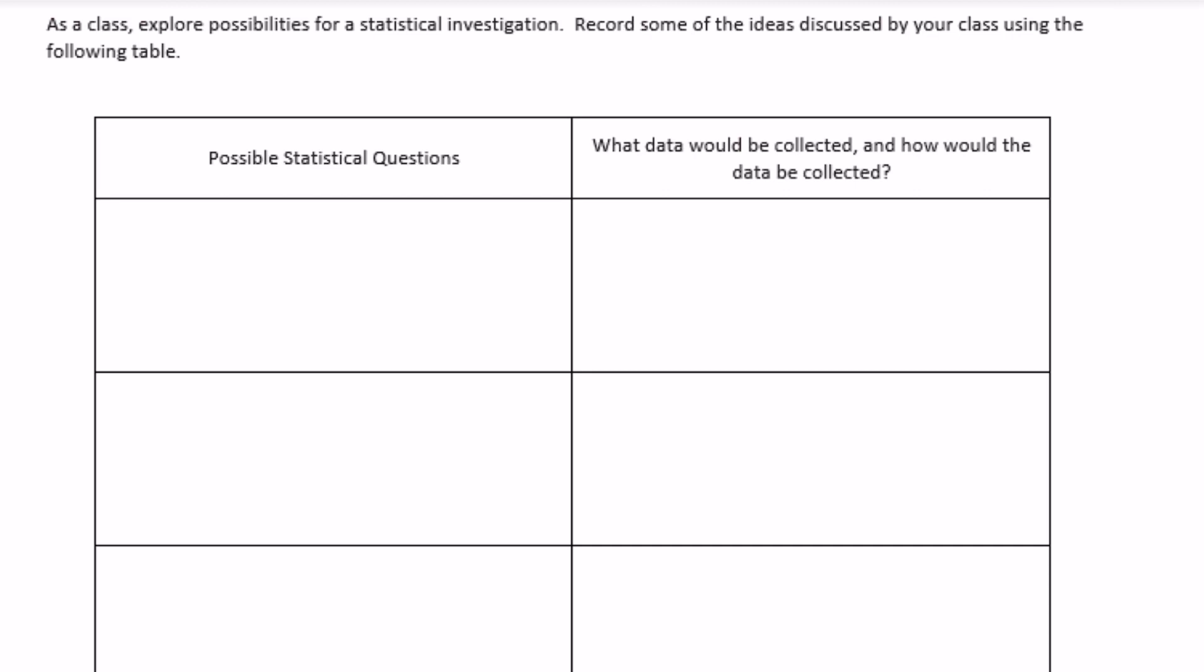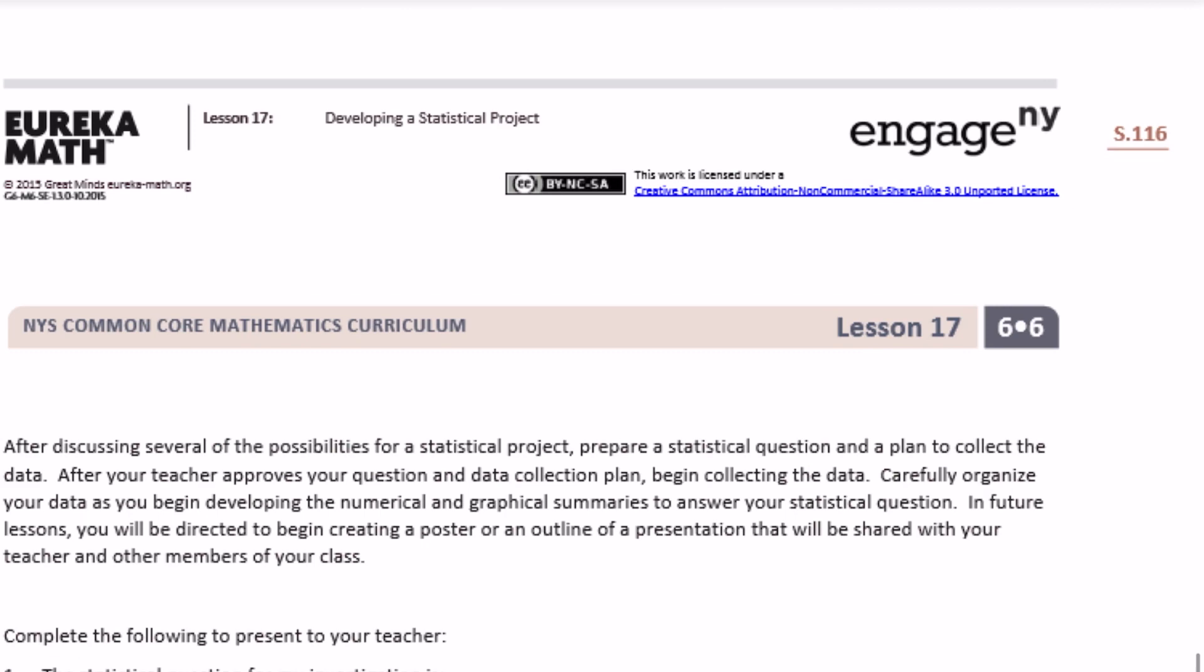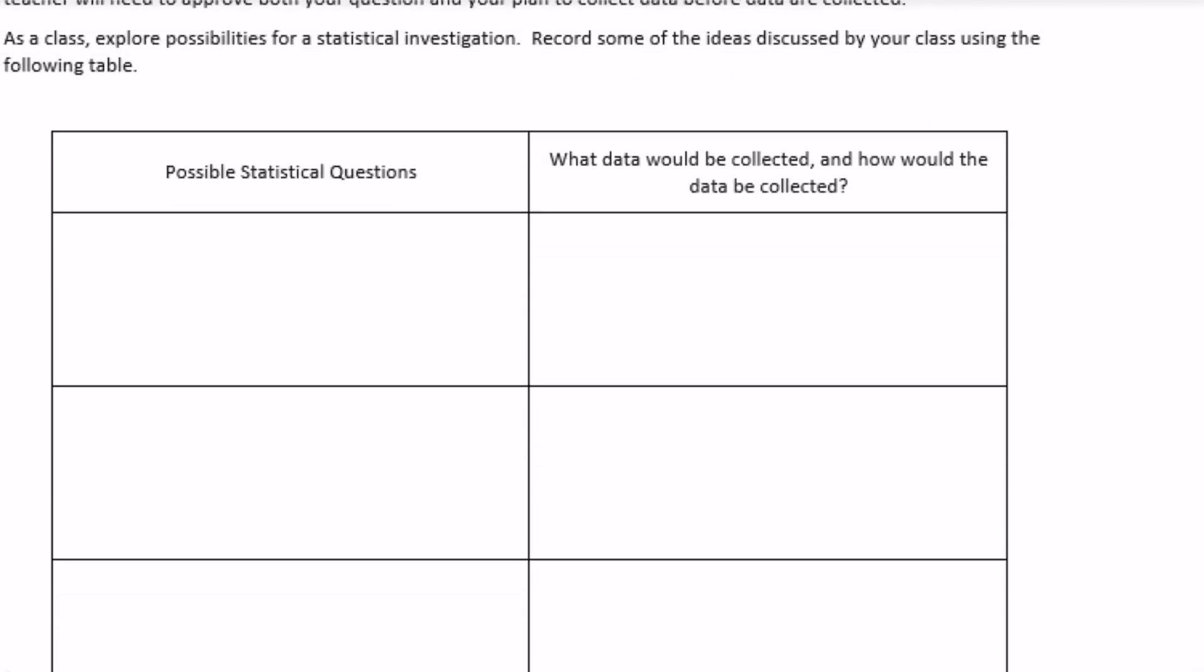Alright, so basically you're just coming up with ideas of what, if you're gonna make your own statistical project, what possible questions you could have. So maybe number of video games played each night. Maybe not number of video games, let's say like hours of video games or maybe minutes. You could say minutes of video games played each night. So it could range anywhere from zero minutes to maybe some people play all night long. So how would the data be collected? What data would be collected and how would the data be collected? You could ask classmates, organize it in a dot plot or a box plot.